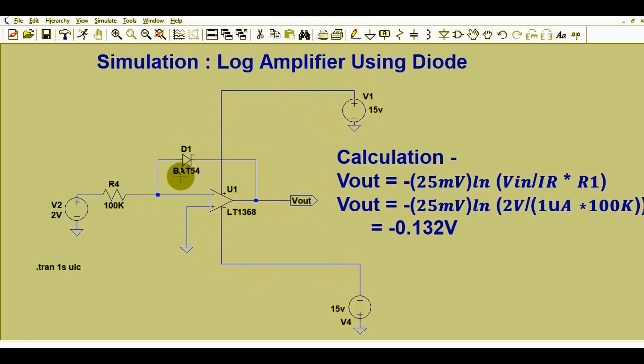Diode D1 is BAT54. With this diode, the op-amp is connected in a closed-loop configuration. There is a resistor R4 which is 100k, and this is the input voltage which is 2 volts.